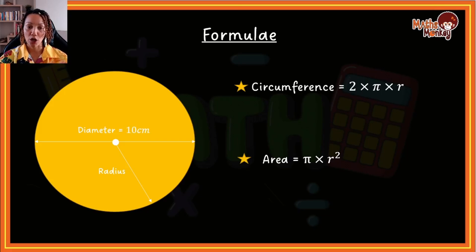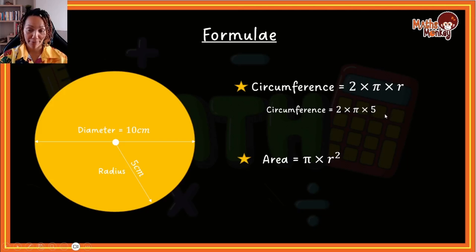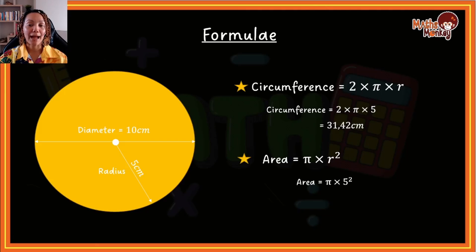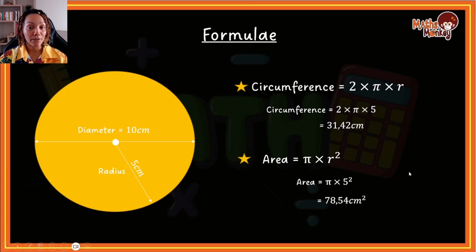For circumference, it will be 2 multiplied by pi multiplied by 5. The 2 comes from the formula, the pi comes from the formula, and 5 is essentially the radius of the circle because the diameter is 10. So 2 times pi times 5 equals 31.42 centimeters — if I were to take a string and wrap it right around the circle, the length of that string would be 31.42 centimeters. For the area, it equals pi multiplied by radius squared, and the radius is 5, so pi multiplied by 5 squared is 78.54 centimeters squared, because we are calculating area.